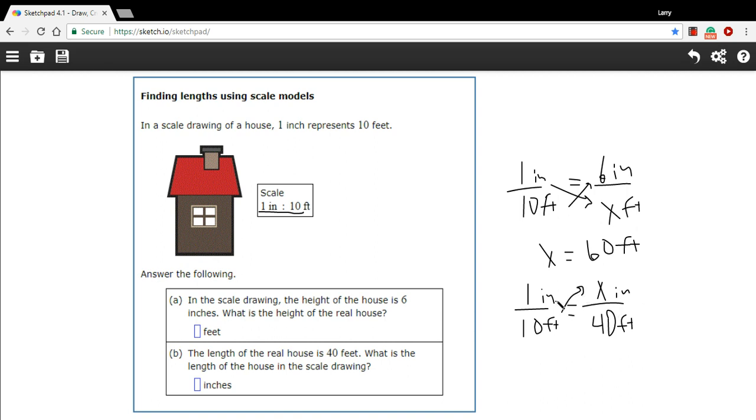We'll cross multiply again. So 10 times x is 10x. 1 times 40 is 40. We divide by 10. And we get x equals 4 inches.